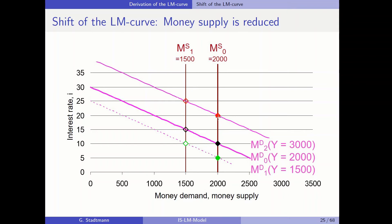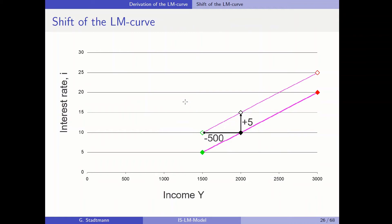In the red scenario, the interest rate increases from 20 to 25. This tells us that when the central bank decreases money supply by 500 units, the LM curve shifts upwards by 5 units. We can see this in the next graph: the LM curve shifts vertically 5 units upwards. We could also argue that each dot shifts 500 units to the left — so we can talk about either a horizontal or vertical shift.